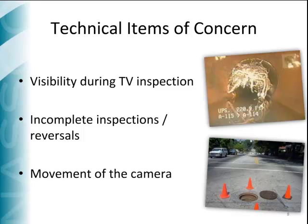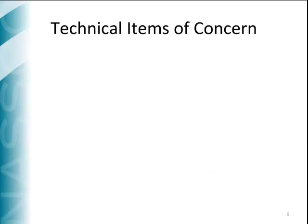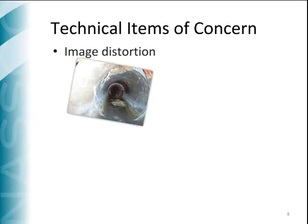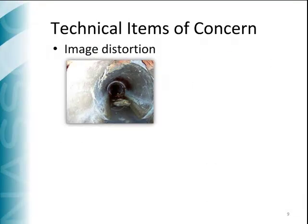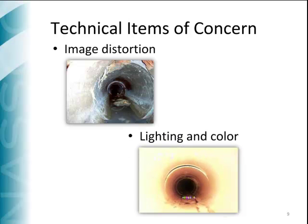To avoid visual misconceptions of defects, the camera should be moved through the pipe at a steady pace not to exceed 30 feet per minute. New pipe scanning technologies may allow for faster camera movement. Image distortion is a common problem when the camera is not properly centered. Excessive lighting is another common issue in light color materials and in overly adjusted camera iris.